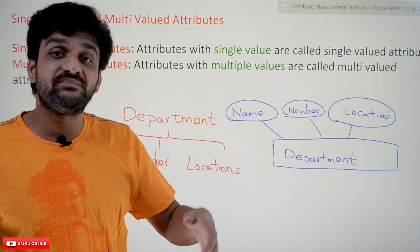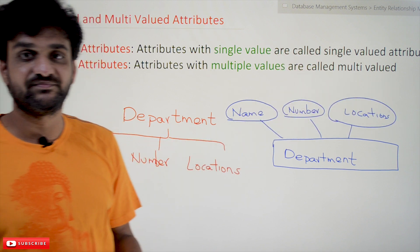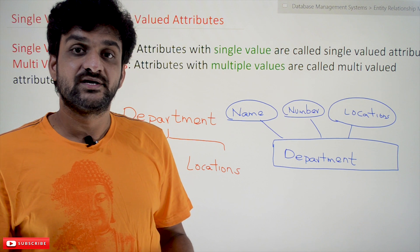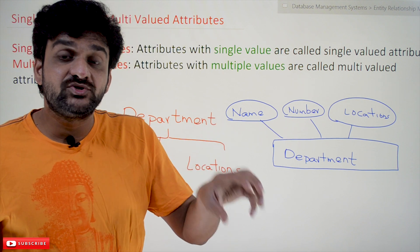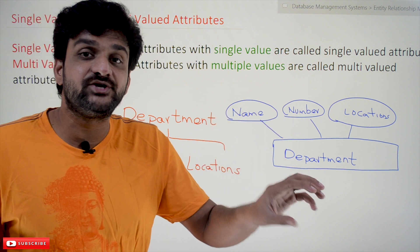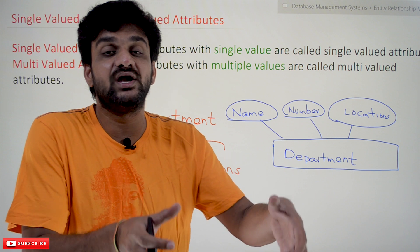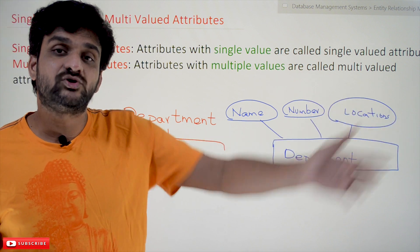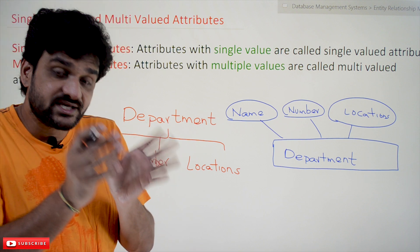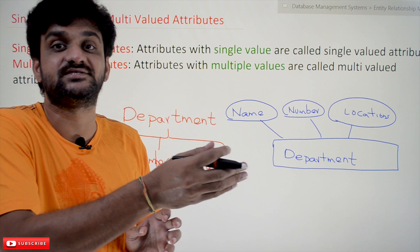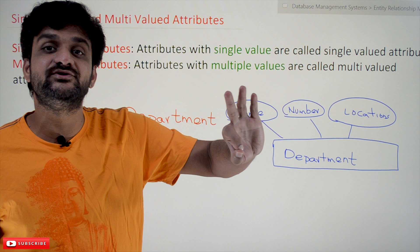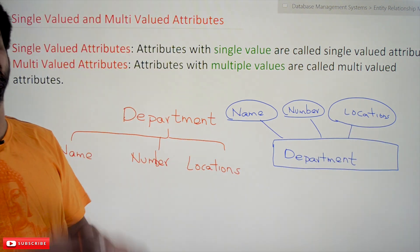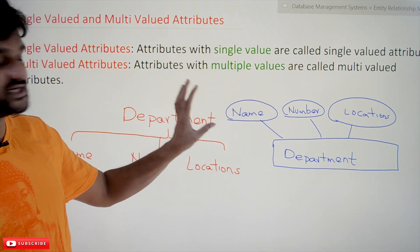What about locations? A department can be located in different locations. For example, a financial department may be present in Mumbai and also in Delhi — so it has multiple values. Attributes that have the possibility of holding multiple values are called multi valued attributes. Similarly, an administrative department could be located in Hyderabad, Chennai, and Bangalore — three values for a single attribute. So the location attribute is what we call a multi valued attribute.